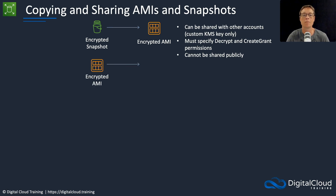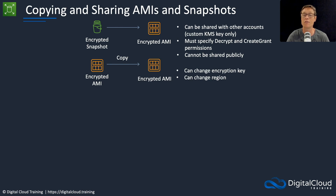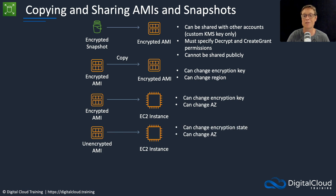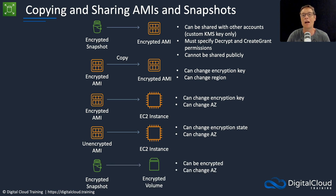You can copy an encrypted AMI to another encrypted AMI, changing the encryption key and region in the process. If you're using the default encryption key and want to share the AMI with another account, this is a good opportunity to change the key and then share it. You can take an encrypted AMI, create an EC2 instance, and change the encryption key and availability zone. You can take an unencrypted AMI, create an EC2 instance, and change the encryption state and AZ. Finally, you can take an encrypted snapshot, create an encrypted volume, and change the AZ.